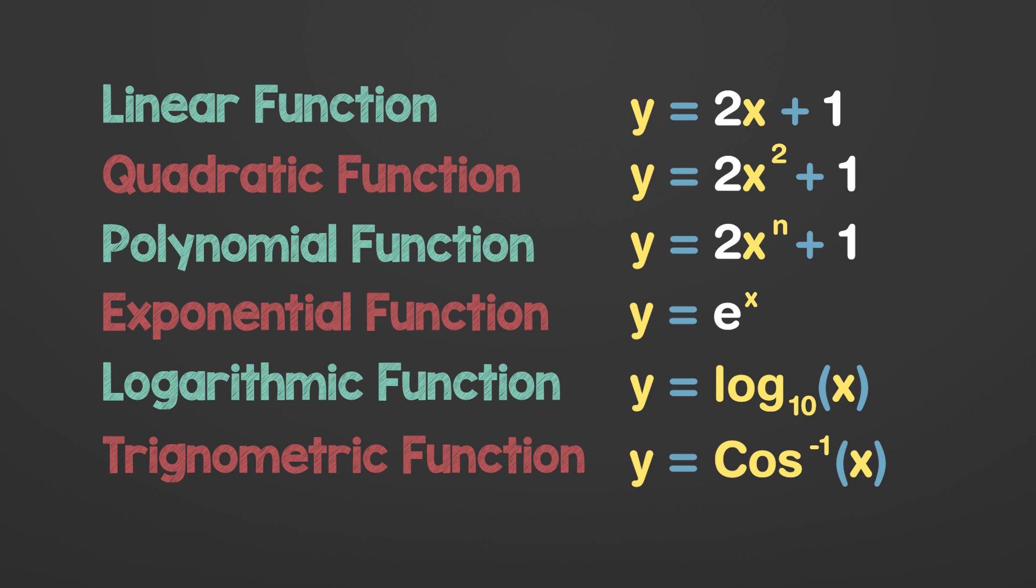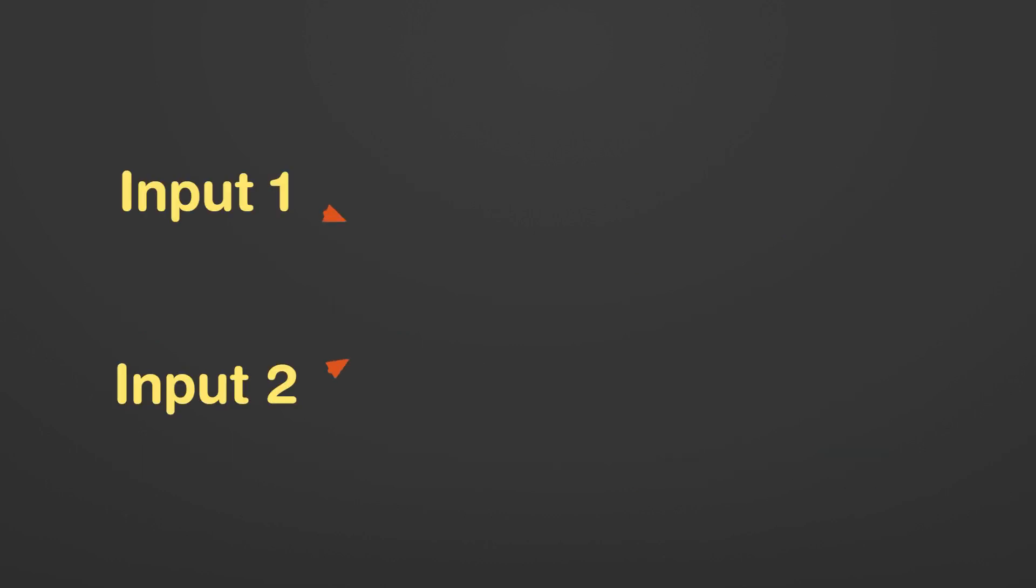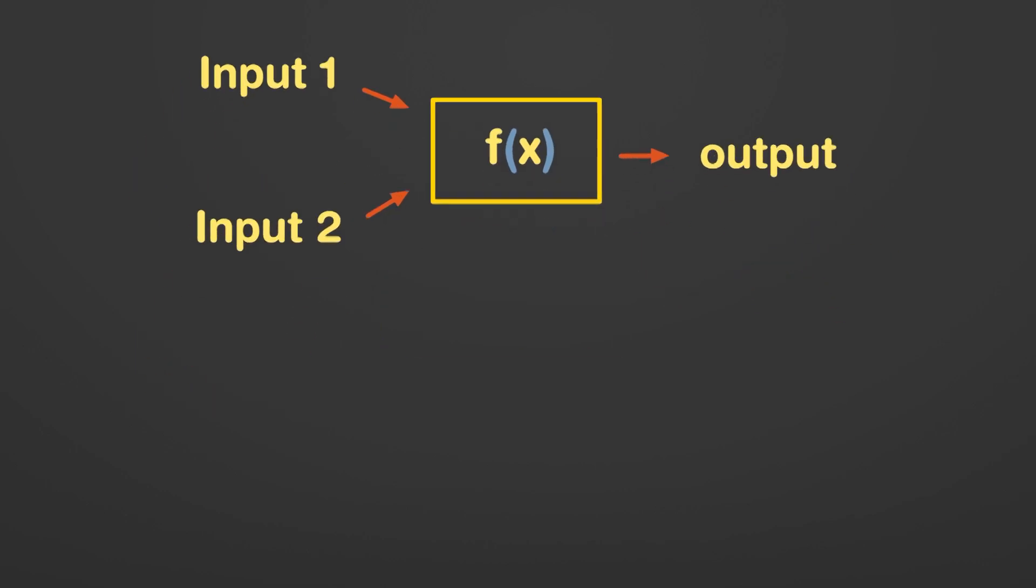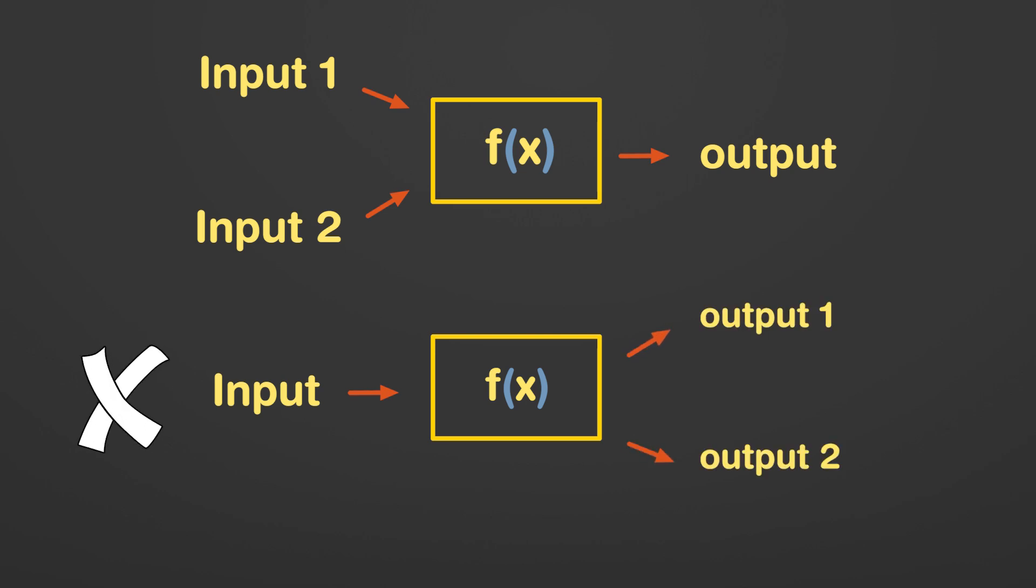Now winding up this video with the most important concept of functions, all input values will have exactly one output value respectively. Not even a single input value is allowed to have more than one output values. However, more than one input values can have exactly the same output value.